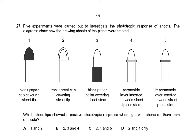Question number 27: five experiments were carried out to investigate the phototropic responses of shoots. Photo means to light. The diagram shows how the growing shoots of the plants were treated. In a phototropic response, the tip has to receive the light.